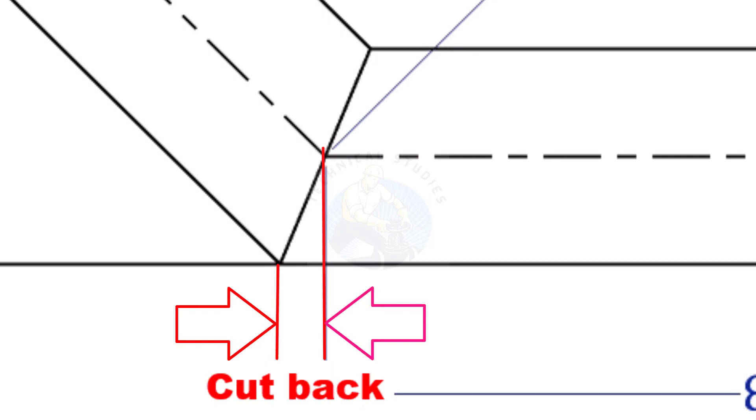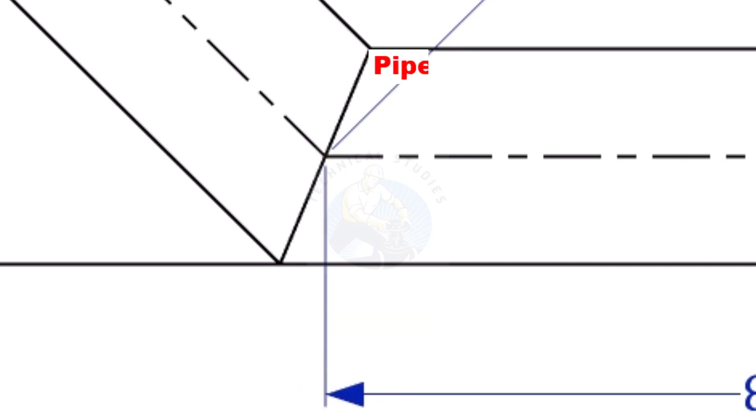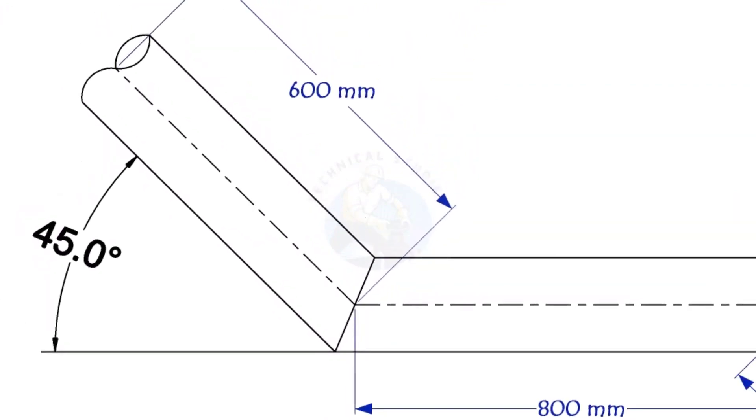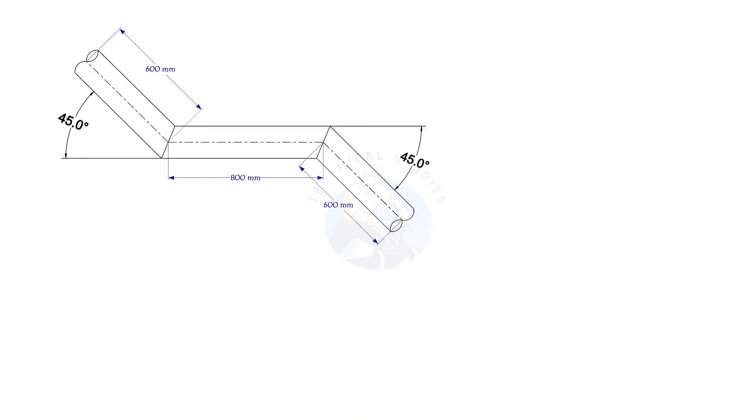To mark a miter cut, we need to know the cutback of the miter. In this offset, the nominal diameter of the pipe is 6 inch. The angle of the miter is 45 degrees. This method is suitable for cutback of any degree. The outside diameter of a 6 inch pipe is 168.3 millimeters.